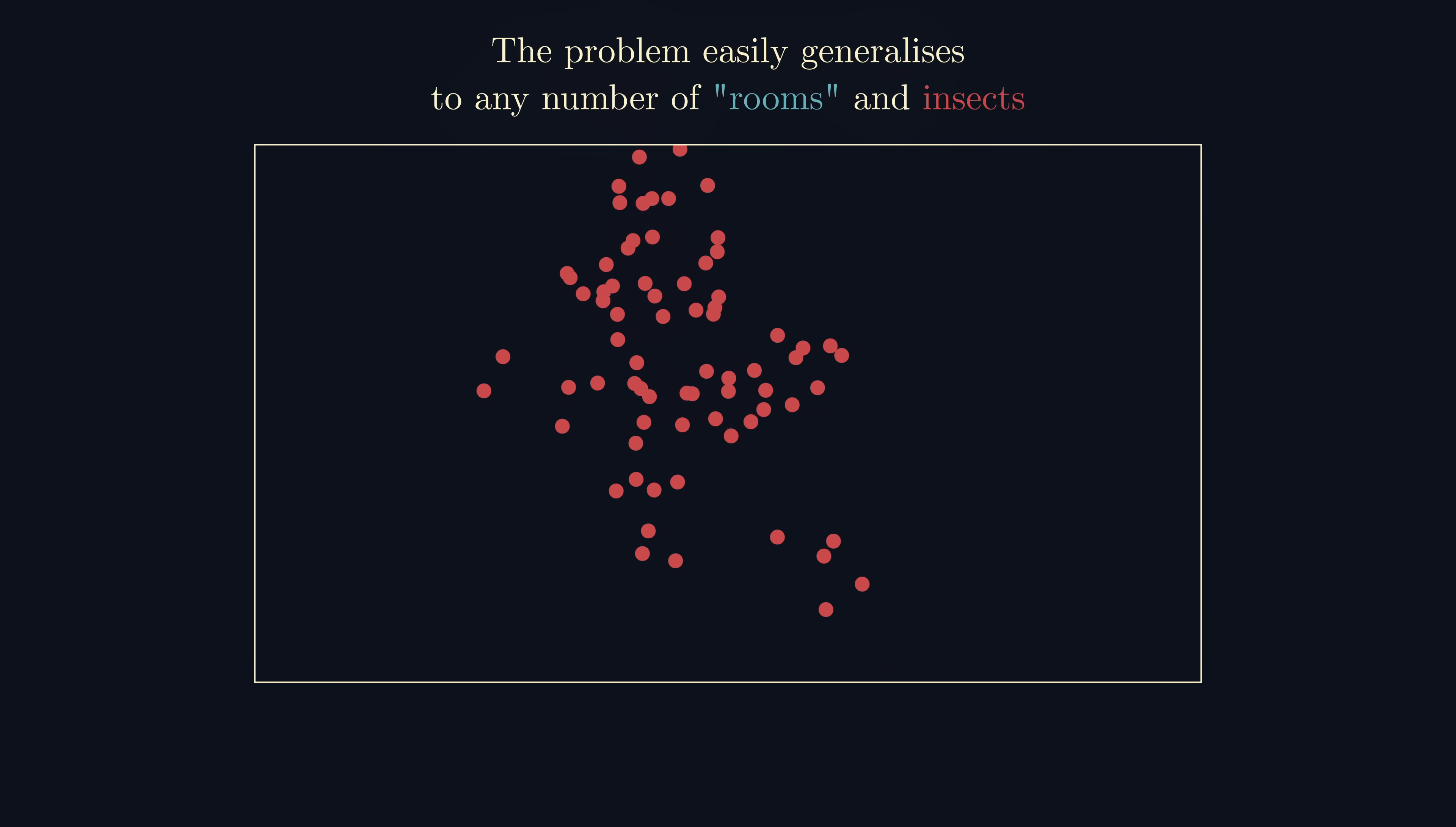While this may seem somewhat obvious, this kind of principle where many simple individuals can appear to perform complex and coordinated tasks appears throughout nature, and it's beautiful how the reason this works is rooted in mathematics and statistics.